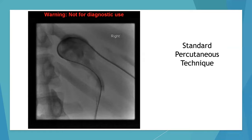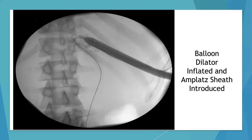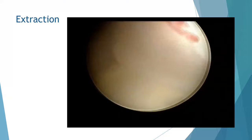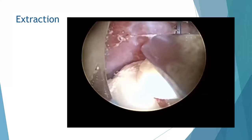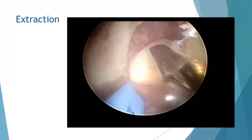Standard percutaneous techniques were used to advance the wire. A balloon dilator was then introduced, followed by an Amplatz sheath after balloon dilation. Once access was gained into the calyceal diverticulum, stone extraction was performed using two and three prong graspers. Shock pulse ultrasonic lithotripsy can also be used.